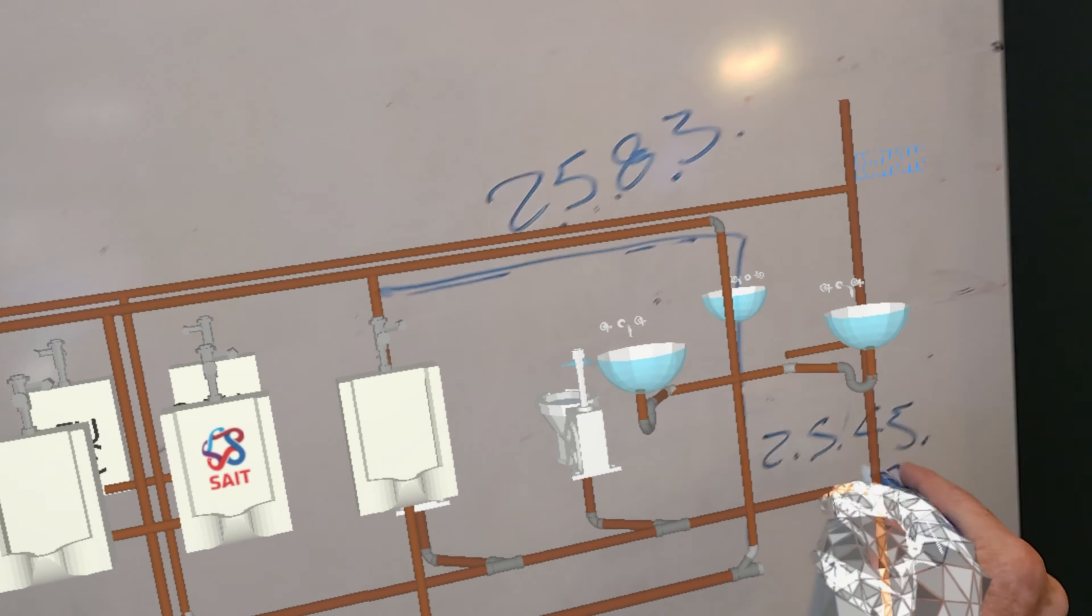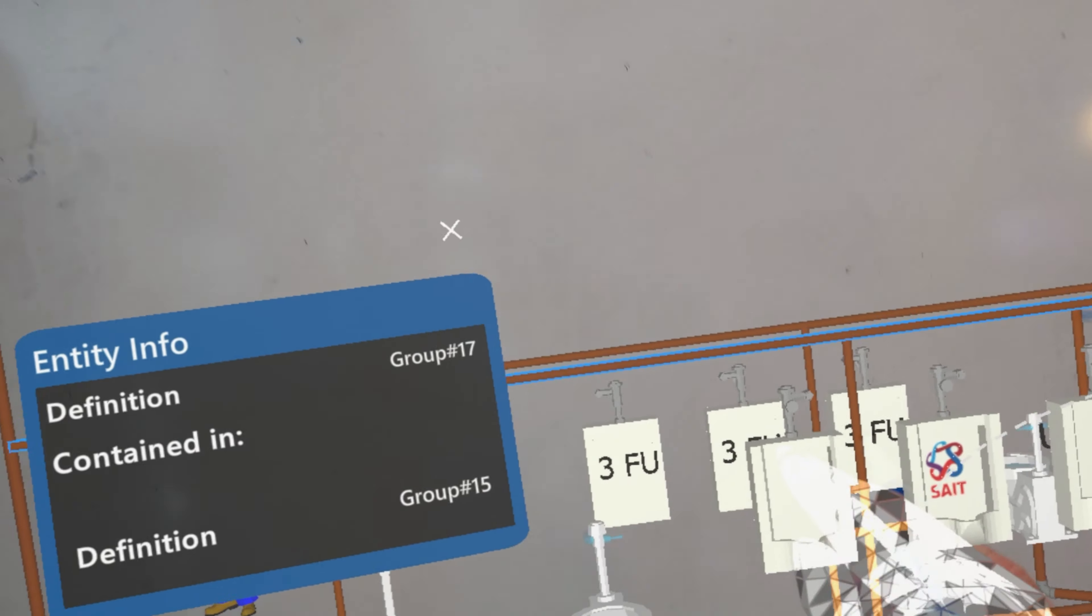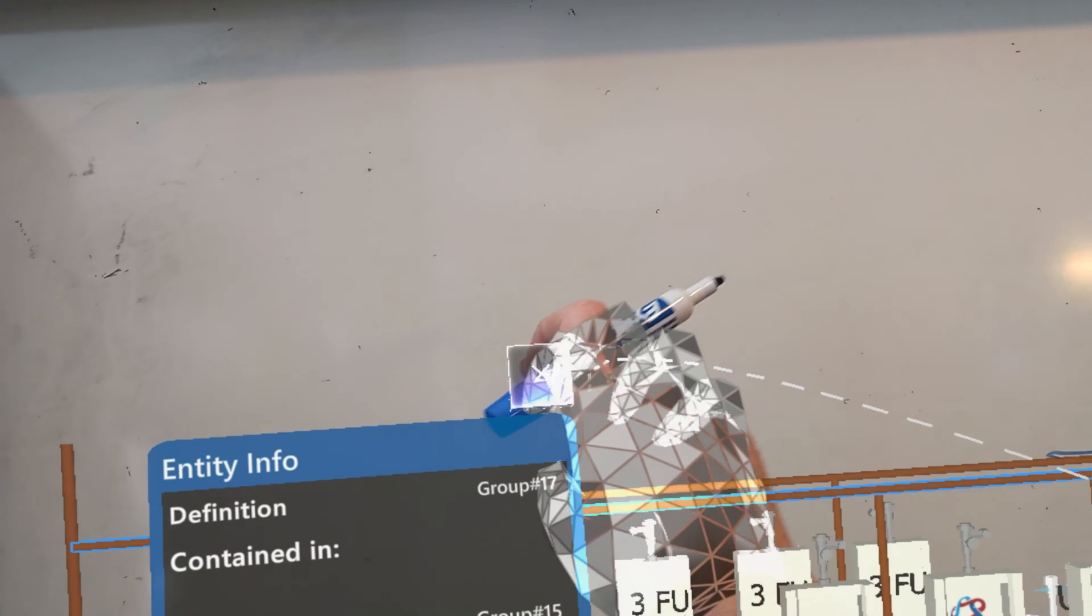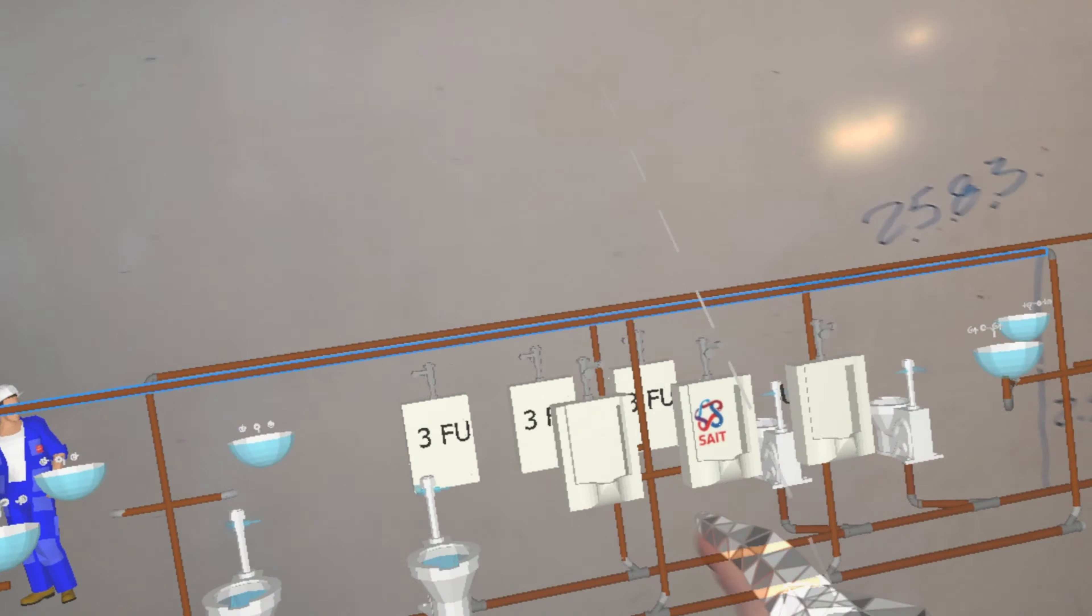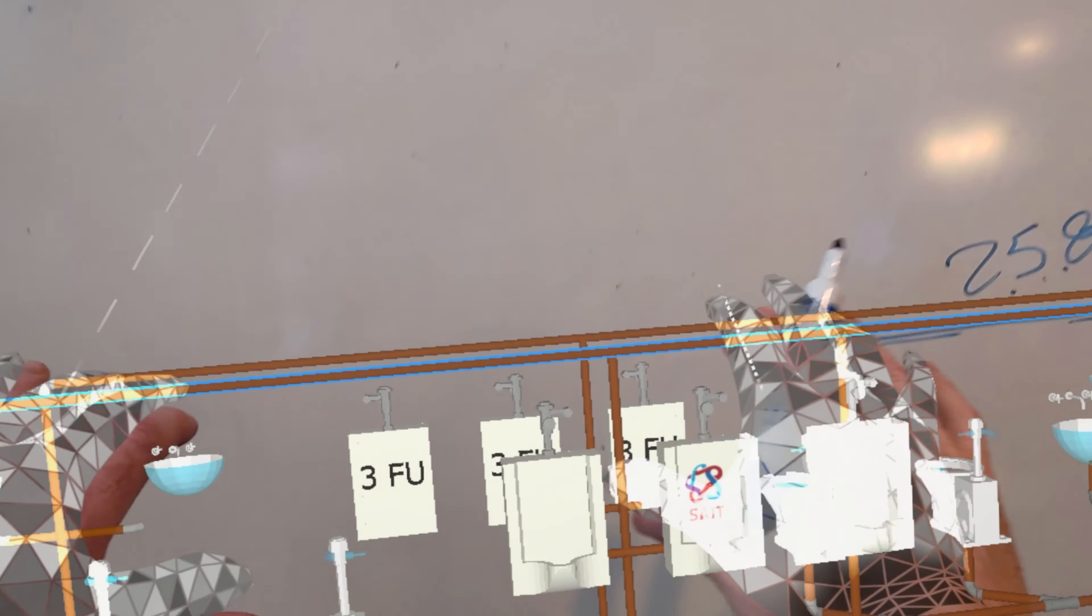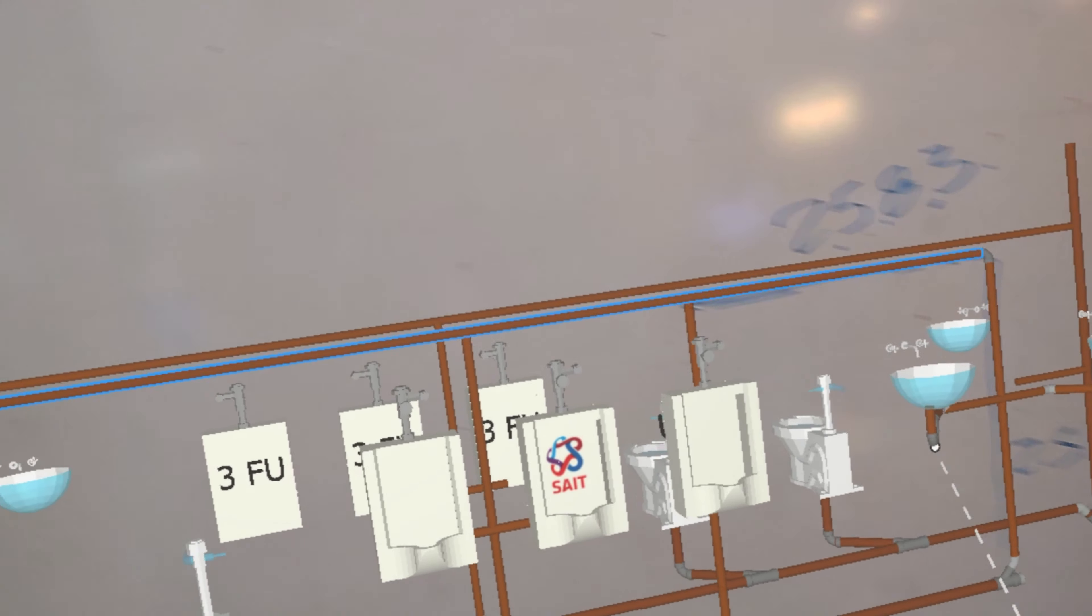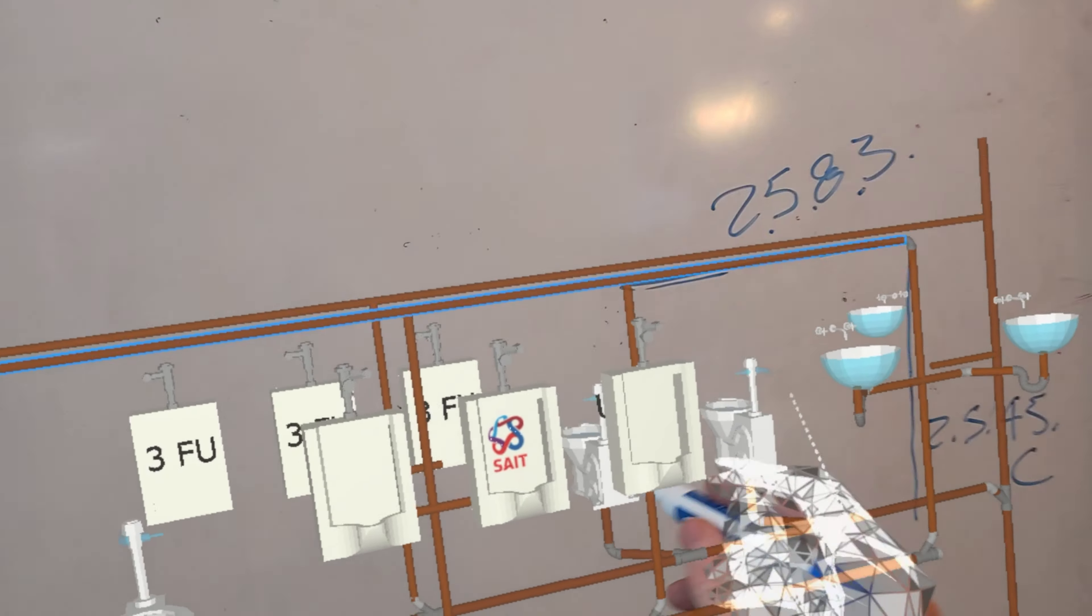And of course you size the wet portion by 2545 subsection C. As it says right here on these urinals, because the bathroom on the other side is identical, it's just the opposite. So these are three fixture unit urinals, as you can find in 2493. You have to figure out which ones are three fixture units.